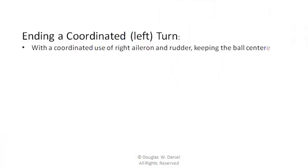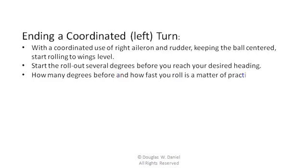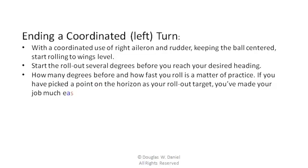Ending a coordinated left turn. With a coordinated use of right aileron and rudder, keeping the ball centered, start rolling to wings level. Start the rollout several degrees before you reach your desired heading. How many degrees before and how fast you roll is a matter of practice. If you have picked a point on the horizon as your rollout target, you've made your job much easier.